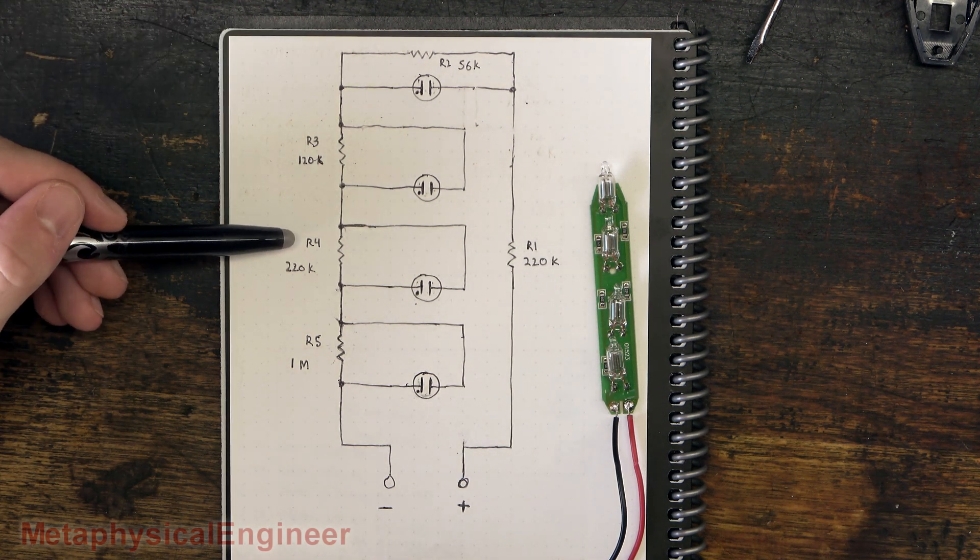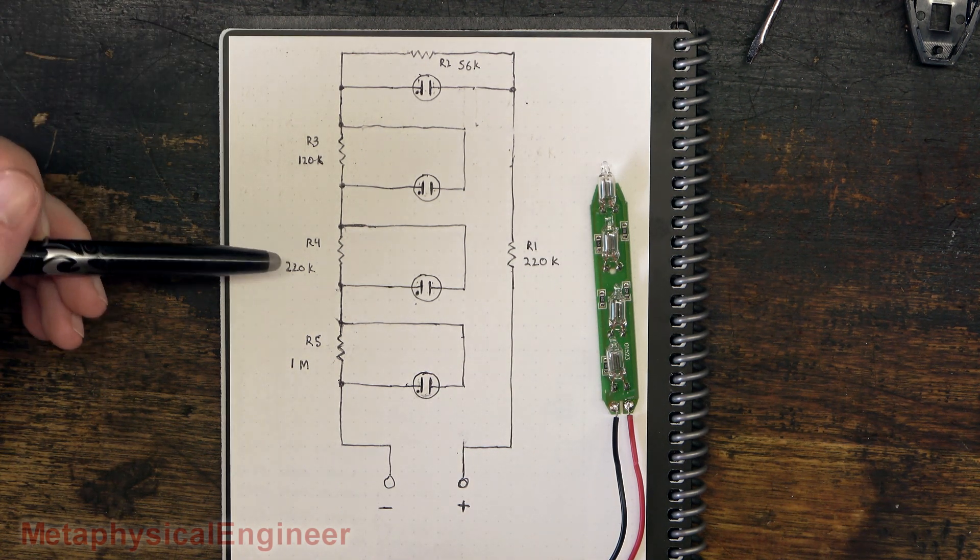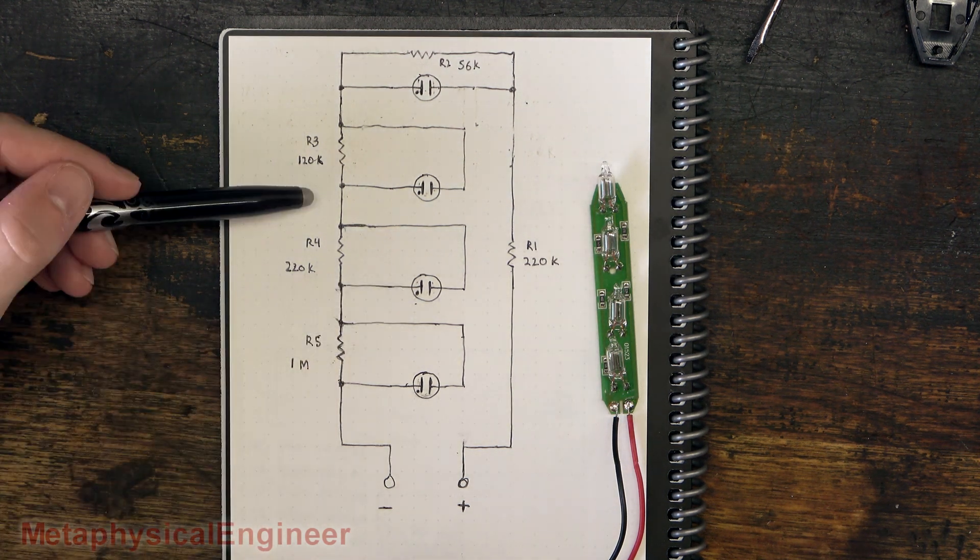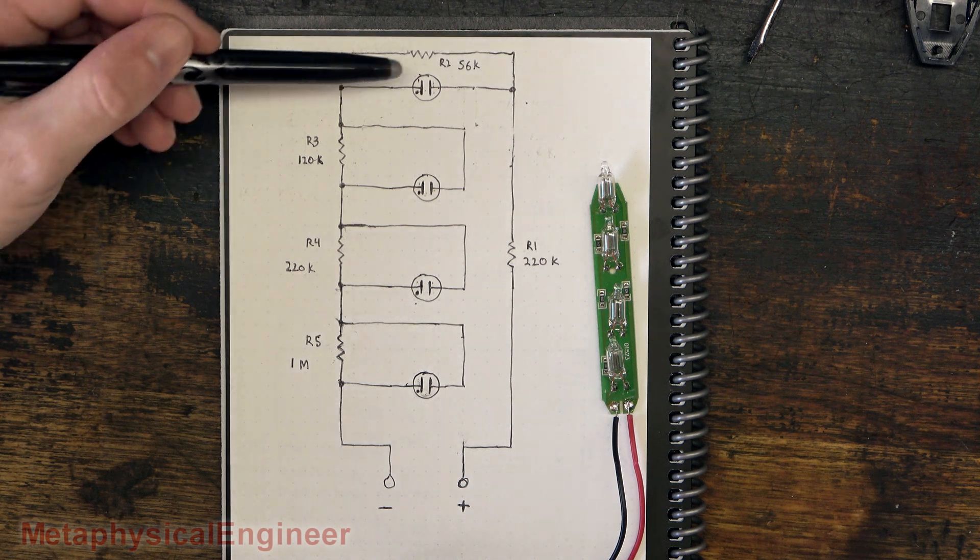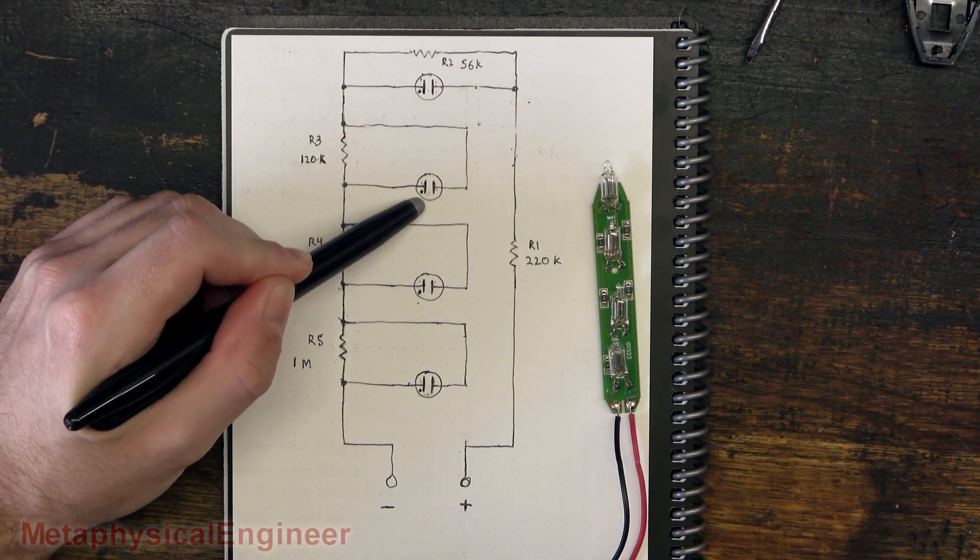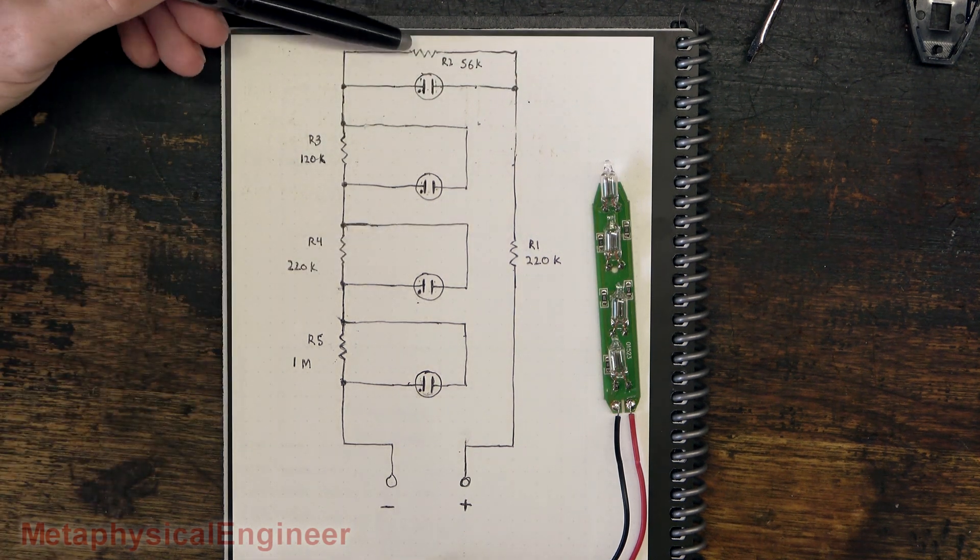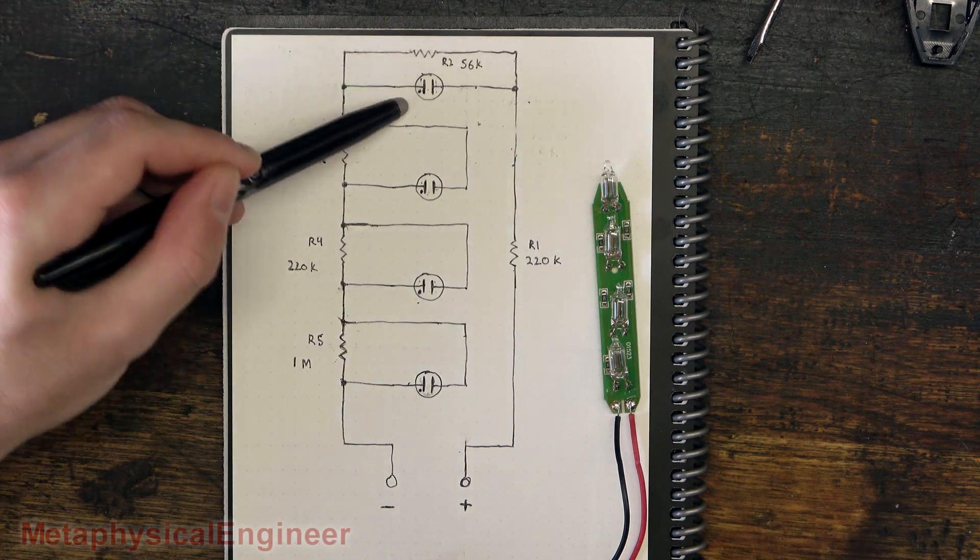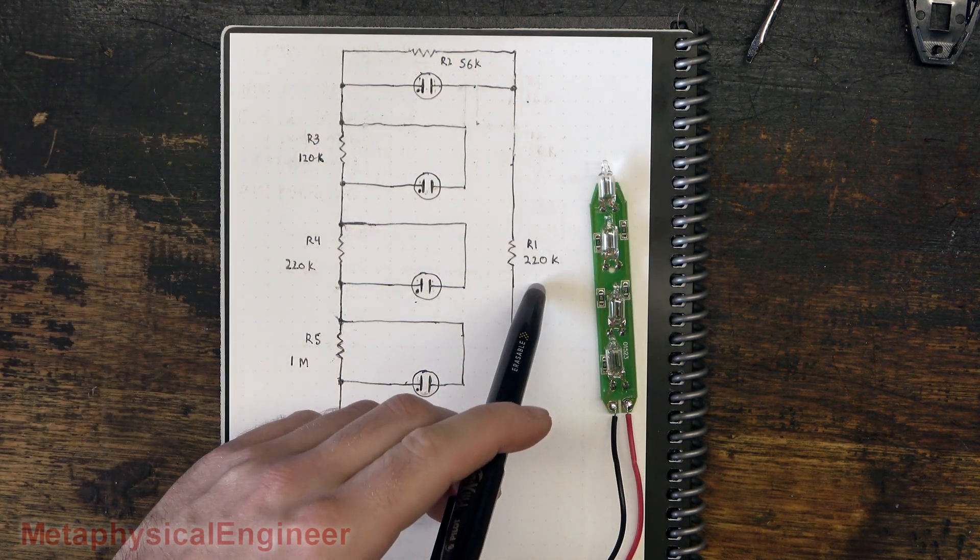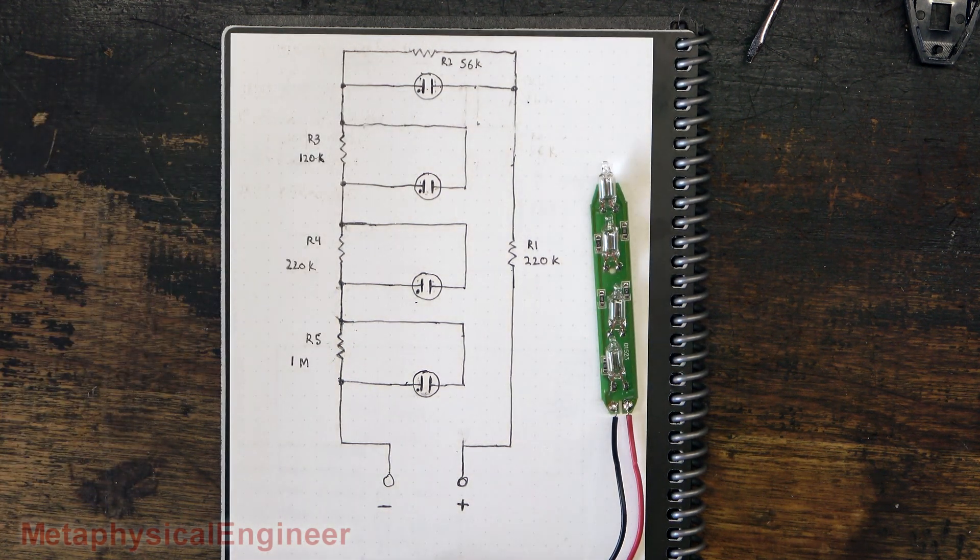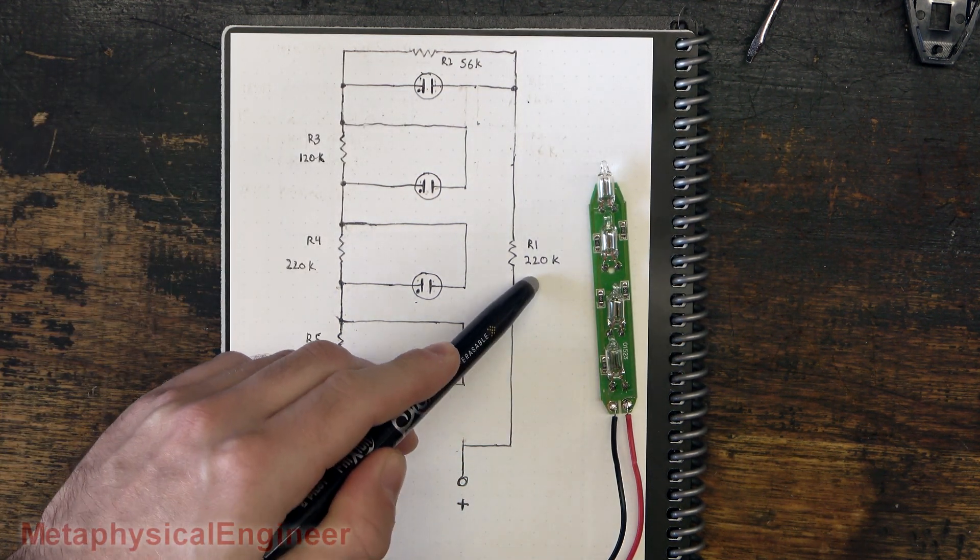As the voltage continues to rise, R4, the 220K resistor, will cause the 220 volt neon to illuminate, causing more voltage drop across R3 and R2. 120K R3 will allow the 277 volt indicator to light, and finally, drop across the 56K R2 will let the 460 volt indicator light. R1 limits current to the whole device. Neons without a ballast will go into runaway. It's a clever circuit, and it works well, but I have my concerns.